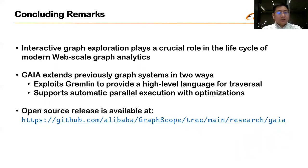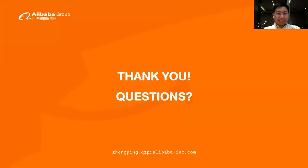Now we conclude. We believe interactive graph exploration plays a crucial role in the life cycle of modern web-scale graph analytics. And Gaia extends previous graph systems in two important ways: by exploiting Gremlin to provide a high-level language for traversal, and at the same time supporting automatic parallel execution with optimizations. An open source release is available at the following GitHub link. Thank you, and I'll be happy to take any questions you may have.